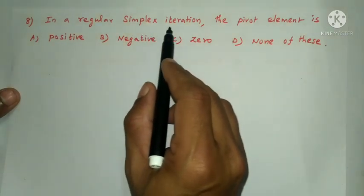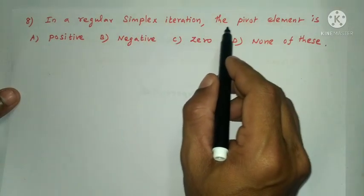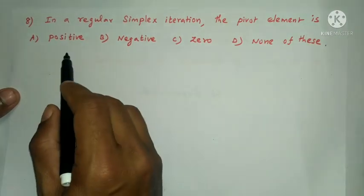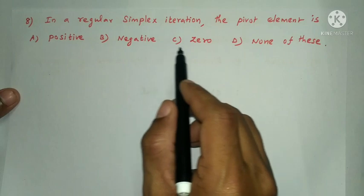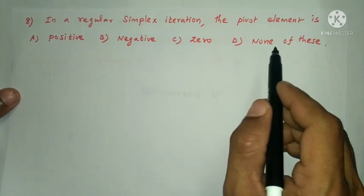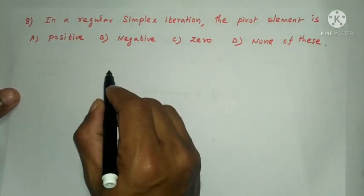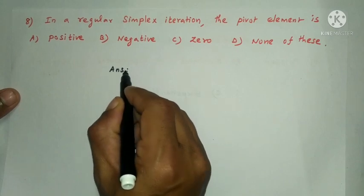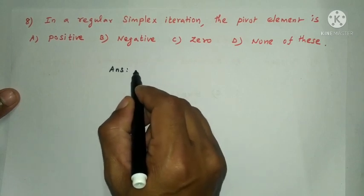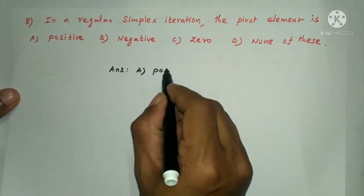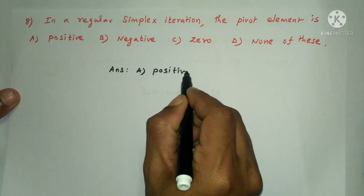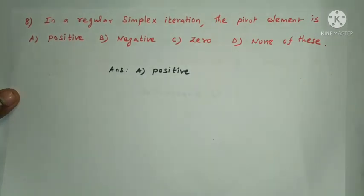Next question: in a regular simplex iteration, the pivot element must be — options: positive, negative, zero, or none of these. The answer is option A: the pivot element must be positive.